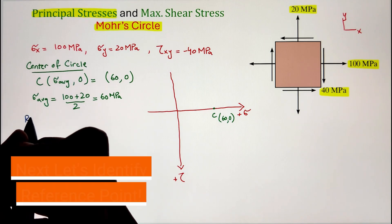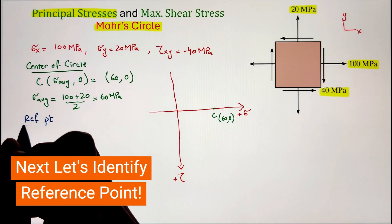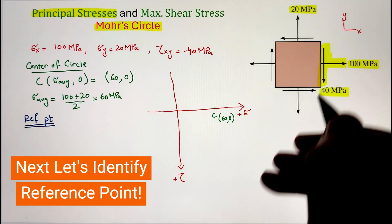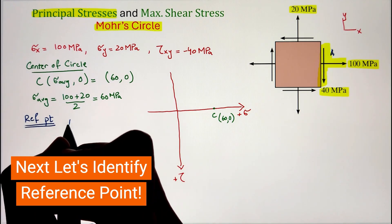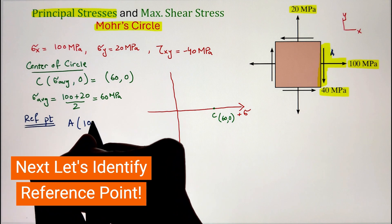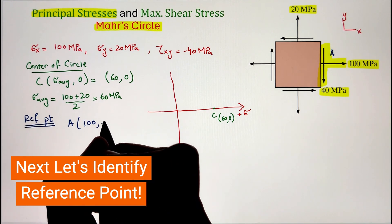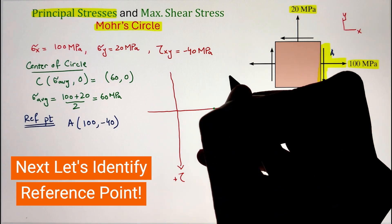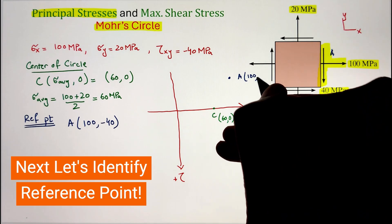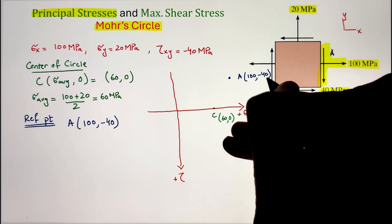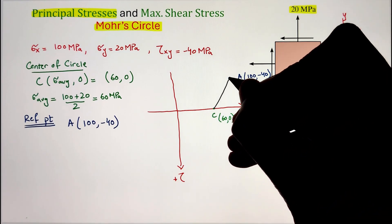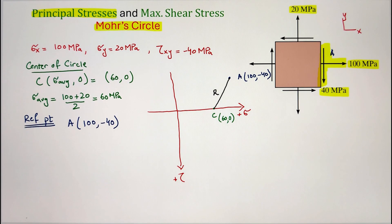Once we have the center point, we have to identify a reference point in order to calculate the radius. For the reference point, we can pick the right-hand side of the square. On that side, we have a normal stress of 100 megapascal and the shear stress going downward of 40 megapascal. So the coordinate of reference point A is given as 100 comma negative 40. We can go ahead and plot that on the graph as well. Just keep in mind, since it was negative 40 and our vertical axis is positive downward, that's why point A is on the upper side.